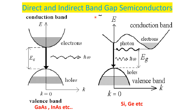In this slide we see direct and indirect band semiconductors using the E-K diagram. In direct band semiconductors, the top of the valence band and the bottom of the conduction band occur at the same K value. This means an electron can transition directly between bands. These materials are known as direct band semiconductors.